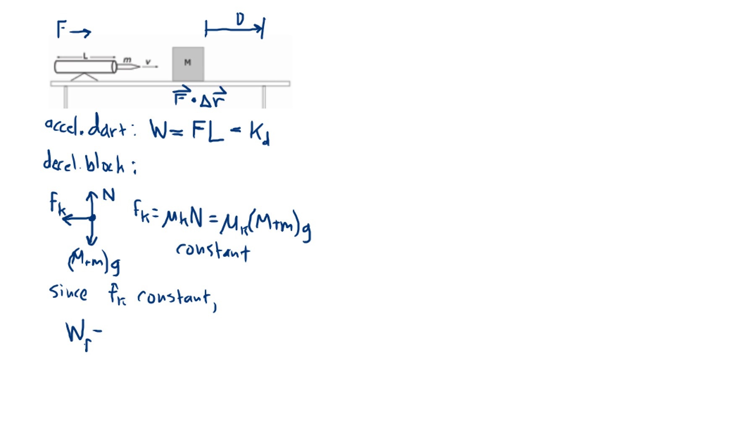So your work done is going to be negative FK times D. So, at this point, basically, what you have is you have most of an argument here, that if you want a bigger D.